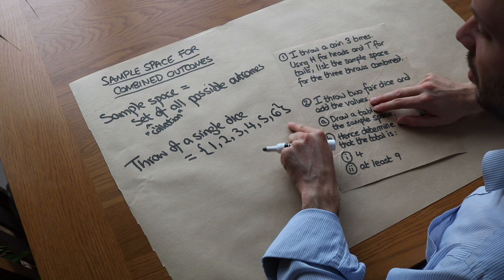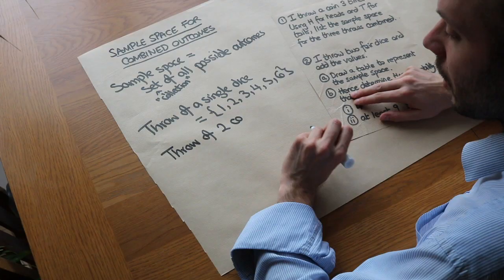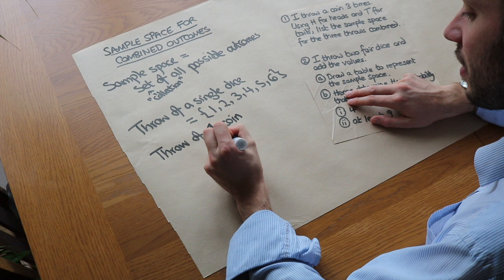Don't worry too much about that notation, but if you look at my videos on sets and Venn diagrams then you will see this particular notation. But it just means a collection of one to six. Now I could similarly have the throw of one coin. What would be the sample space for the throw of one coin? It would be just the set where you can see heads or tails. I'm just going to use H for heads and T for tails.